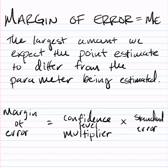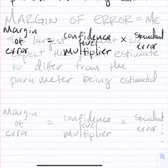Then the standard error is multiplied by that confidence level multiplier, and the product of that is what makes up the margin of error.